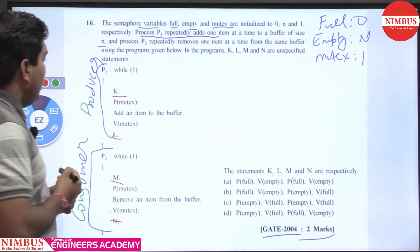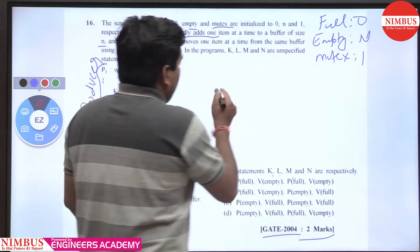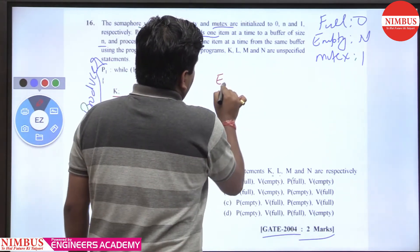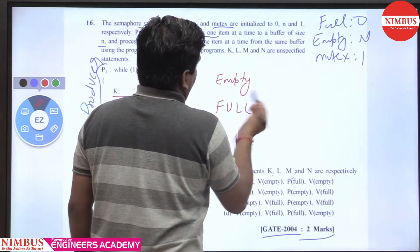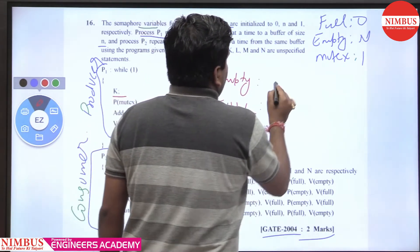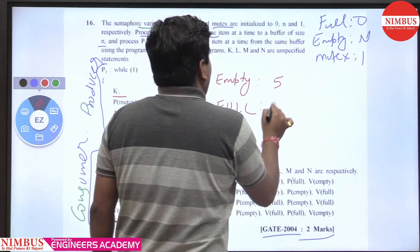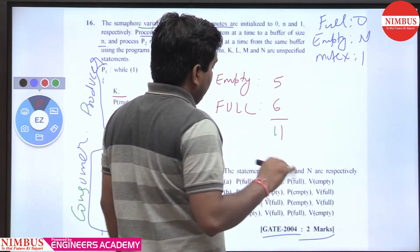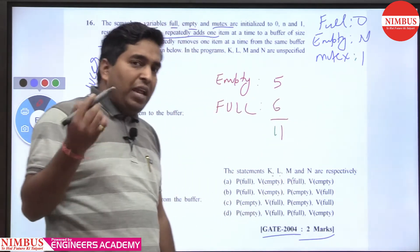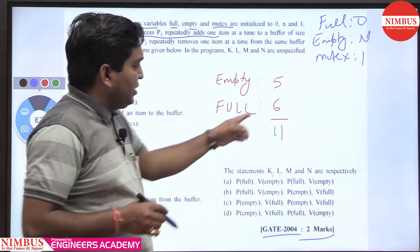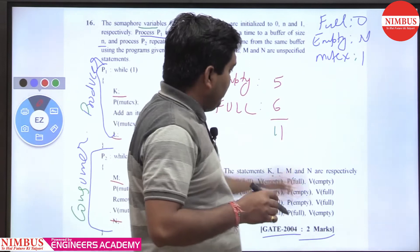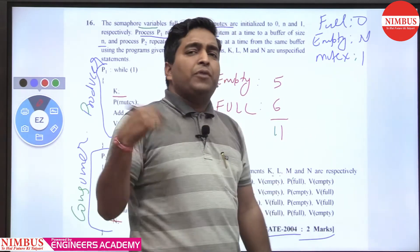Let's examine the producer code. When the producer enters, there are two semaphores: empty and full. Let's take an example where empty is 5 and full is 6, making the total buffer size 11.